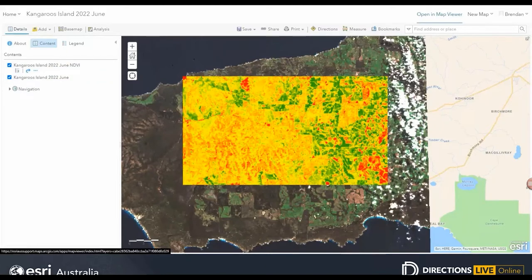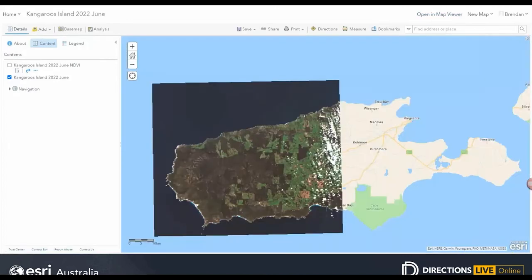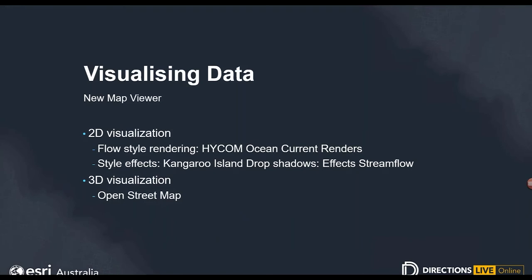That was some clever feature and raster analysis work — all done in the cloud and orchestrated online. Now let's take a look at a couple of new 2D and 3D visualization capabilities unlocked in ArcGIS Online. We're switching from the Classic Map Viewer, where we performed our analysis workflows, over to the new Map Viewer, where we can take advantage of new data visualization capabilities. We're going to look at 2D effects like bloom, drop shadows, and the very cool flow style rendering, as well as some 3D visualization advances with new OpenStreetMap datasets.